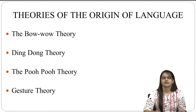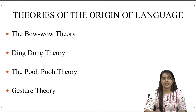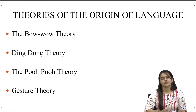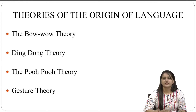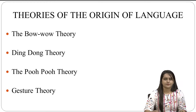The second theory is the Ding Dong theory. This theory propounds that specific kinds of objects so affected primitive man that he was compelled to wring out of them correspondingly specific utterances. For example, words like zigzag and dazzle may be cited as examples.